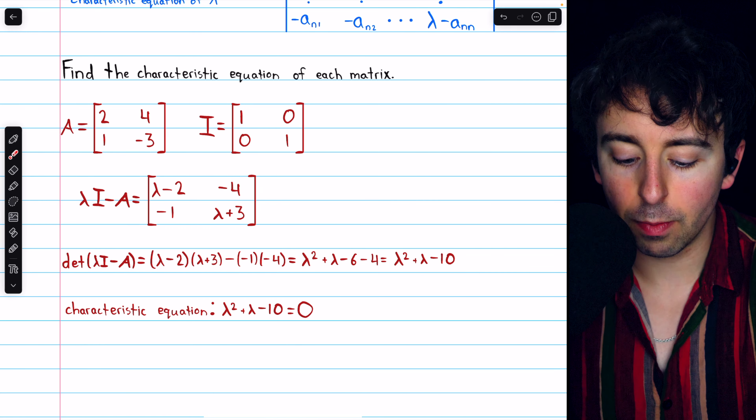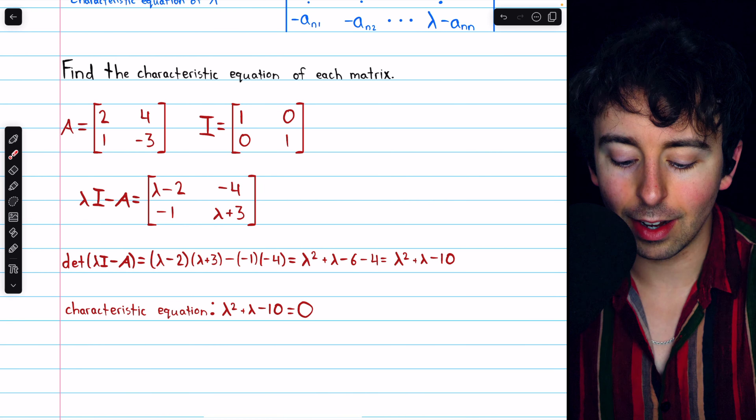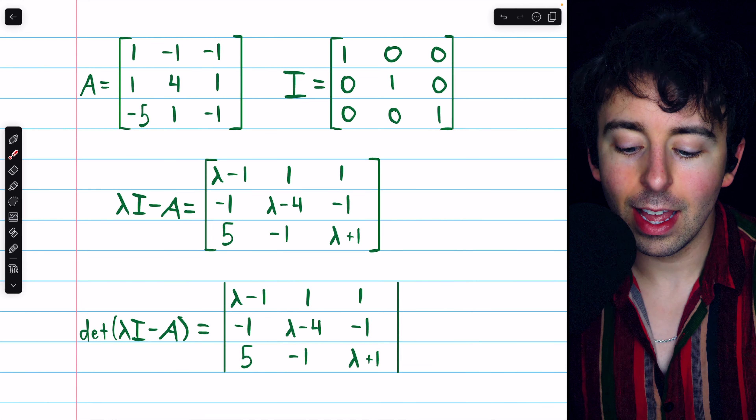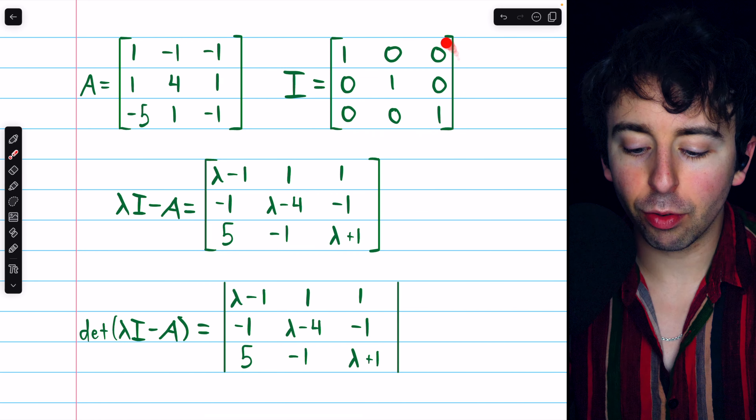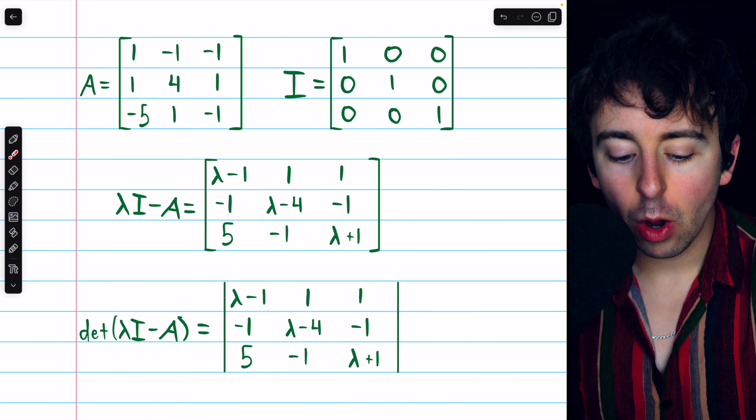The characteristic equation is lambda squared plus lambda minus 10 equals 0. For this next example, we do the same thing. We have this 3 by 3 matrix A, so our identity matrix is the 3 by 3 identity matrix. We consider lambda I minus A, which looks like this. On the diagonal, we have lambda minus the diagonal entries of A, and off the diagonal we just have the negatives of those entries of A. Then we must find the determinant of this matrix and set it equal to 0.